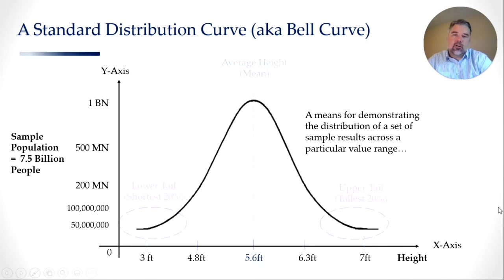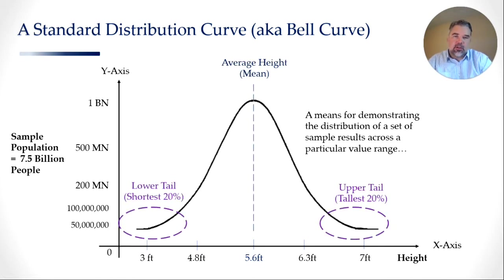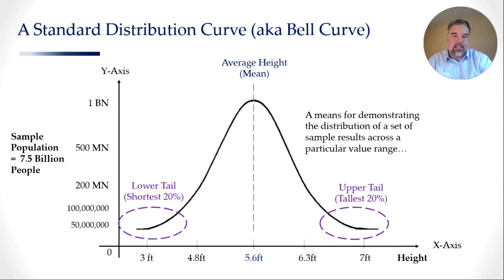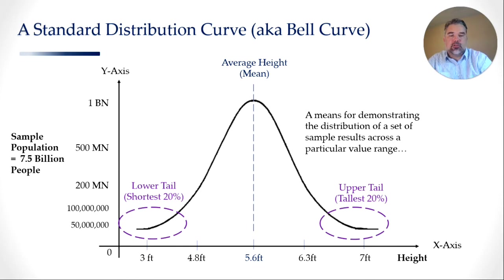Of particular interest on this curve are some of the limits we can notice. For example, this will tell us that the average height, or the mean, is roughly 5.6 feet. And we have an upper and a lower limit: the upper tail, which is typically the tallest 20% of the population, and the lower tail, which is the shortest 20% of the population. Those are probably the key concepts we need to be aware of when we talk about distributions and regressions today.